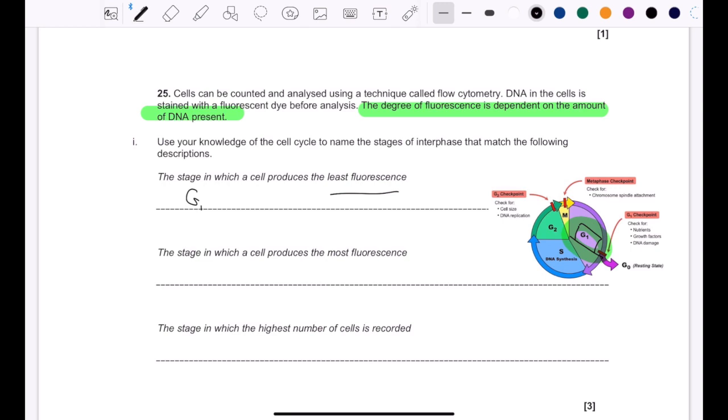Next one says the stage in which a cell produces the most fluorescence. What's another way of saying it? The stage in which a cell produces the most DNA. So where is it? It can't be G1, because that's before S phase. If it already had lots of DNA, why do we need S phase? So there could be two answers, honestly. It could be S phase or it can be G2, because S phase, obviously, DNA replication.